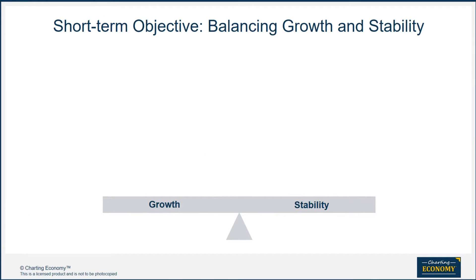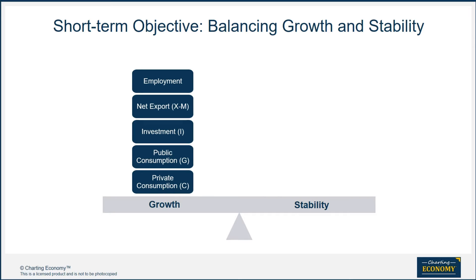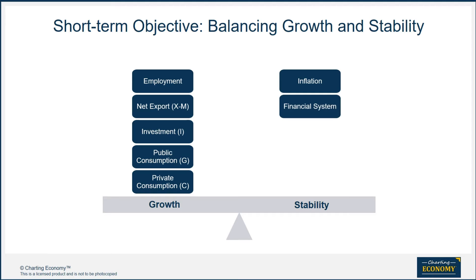The short-term objective of economic policymakers is to balance growth and stability. They can stimulate growth through these four engines on the expenditure side. On the other side, policymakers have to watch out for inflation and other macroeconomic stability issues, such as the financial system's health, fiscal health, balance of payment, and the exchange rate.